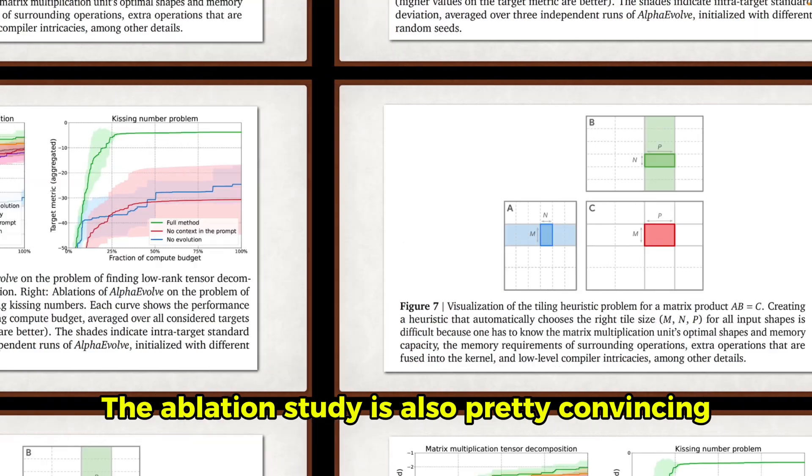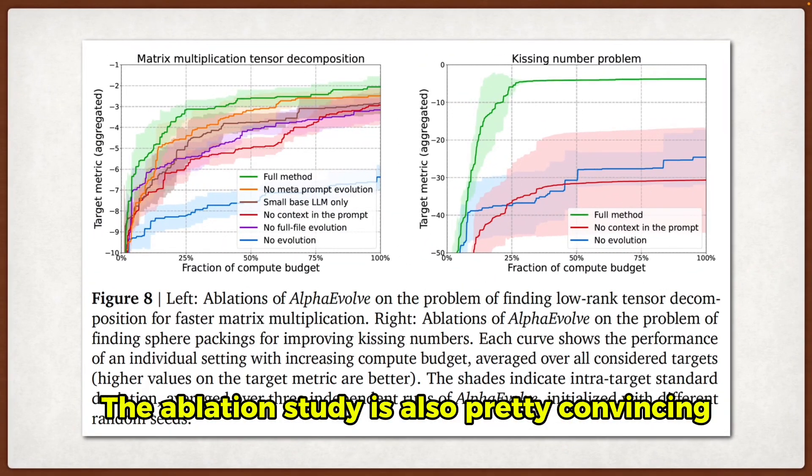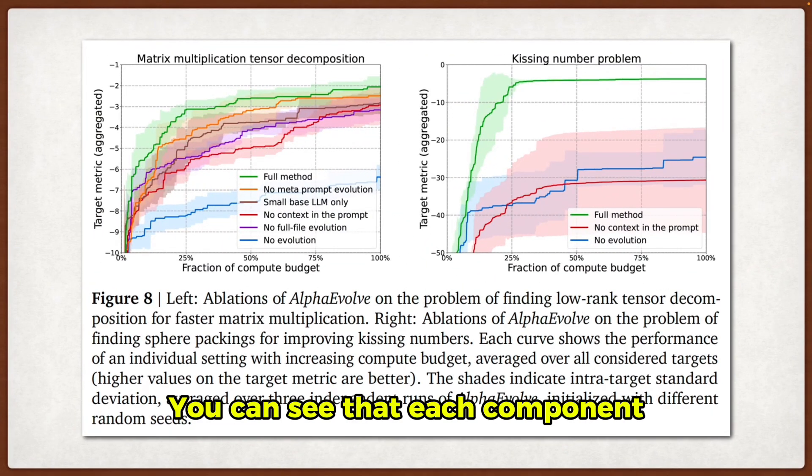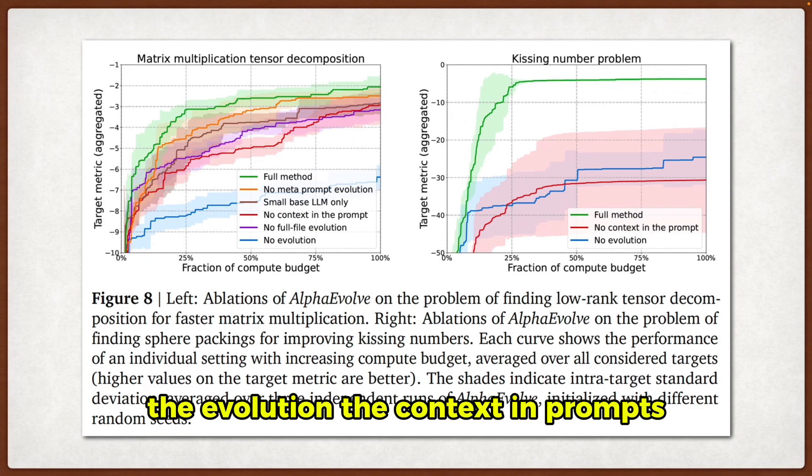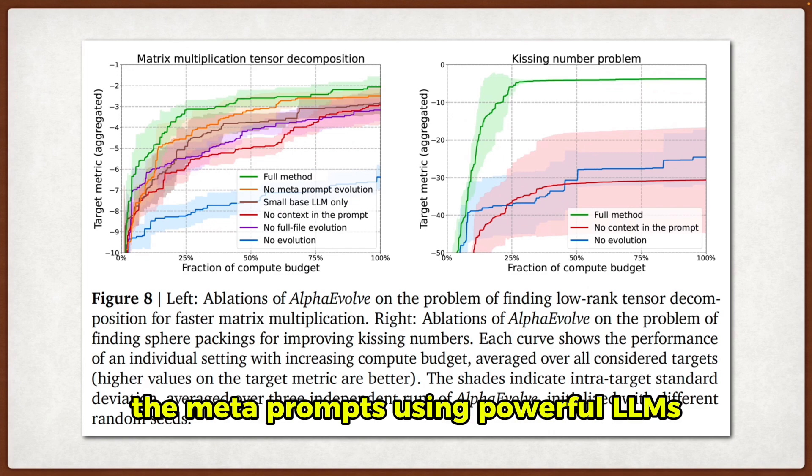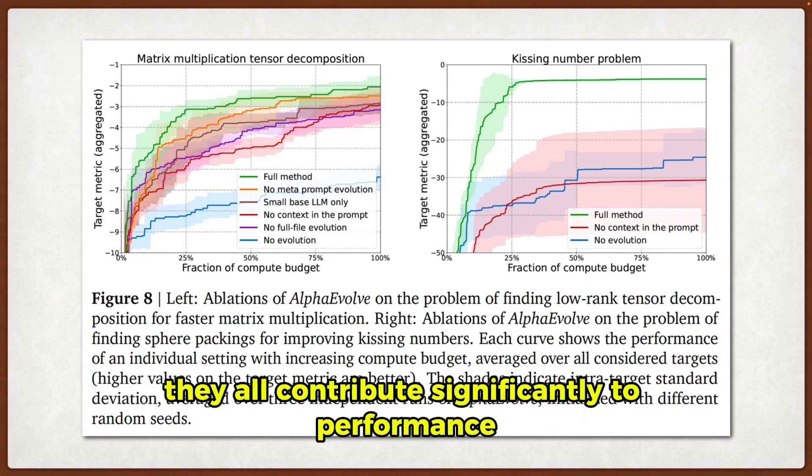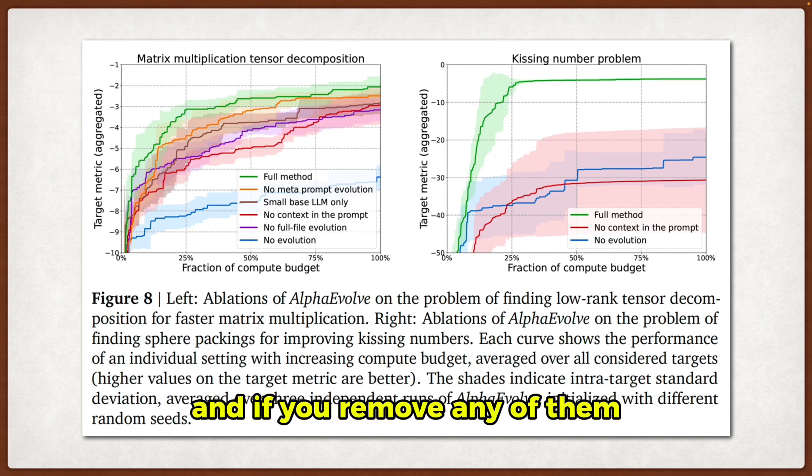The ablation study is also pretty convincing. You can see that each component, the evolution, the context in prompts, the meta prompts, using powerful LLMs, they all contribute significantly to performance. And if you remove any of them, then you get worse results.